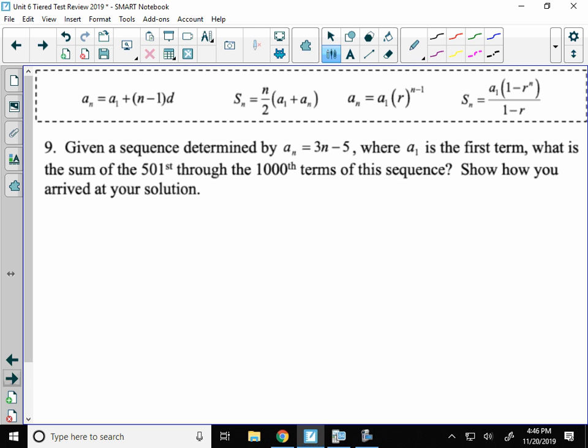All right, number 9. A couple ways you can do this one. I'm going to do it the fast way, but I'll show you how you can do it the longer way as well. Given a sequence determined by a_n equals 3n minus 5, a_1 is the first term. What is the sum of the 501st term through the 1,000th term? Show how you arrive at your solution. My suggestion is to use sigma notation. When I look at this a_n formula, I know it's going to be an arithmetic sequence because that's a linear equation.